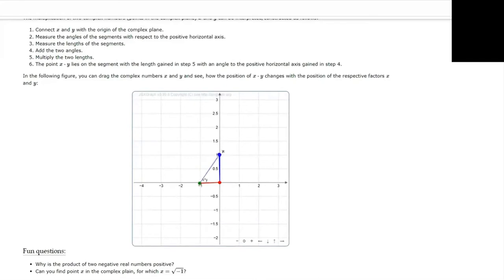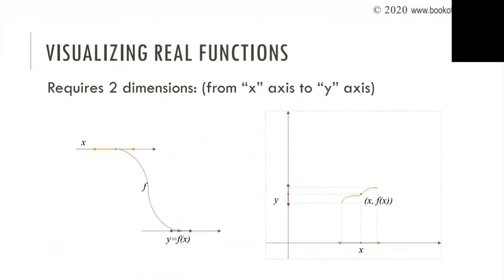JSXGraph can also help to visualize complex valued functions. Let me say what a function is. A function is in mathematics a rule mapping each element of one set into exactly one element of another set. This is indicated in the left side of the drawing, where you can see two real intervals, one marked orange and one marked red. The function f is mapping each point x of the orange interval into exactly one point f of x of the red interval.